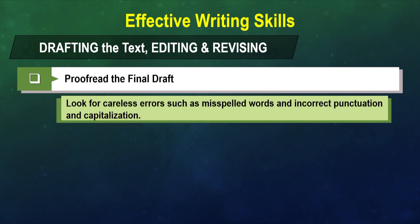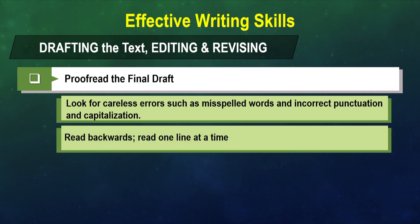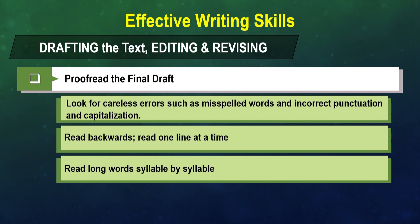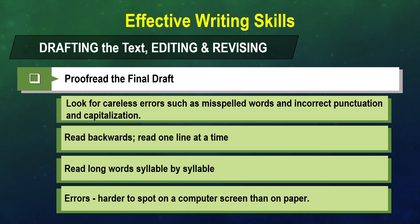One technique is reading the material backwards to identify errors, or you can read one line at a time, or read long words syllable by syllable — for example, 'punc-tu-a-tion'. It is very difficult to detect errors on a computer screen, so it is better to take a printout and check for misspelled words, incorrect punctuation, and capitalization.